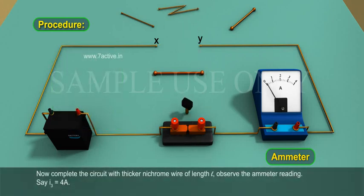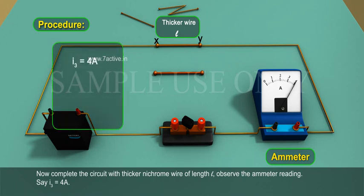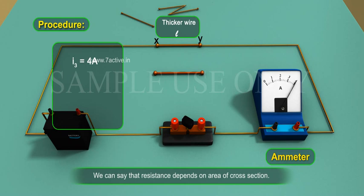Now complete the circuit with thicker nichrome wire of length L. Observe the ammeter reading. Say I3 is equal to 4A. We can say that resistance depends on area of cross section.